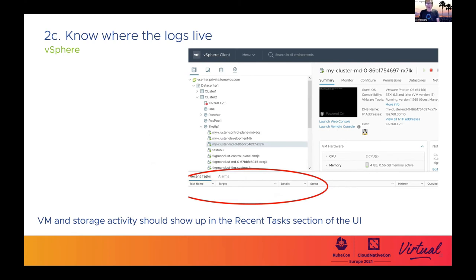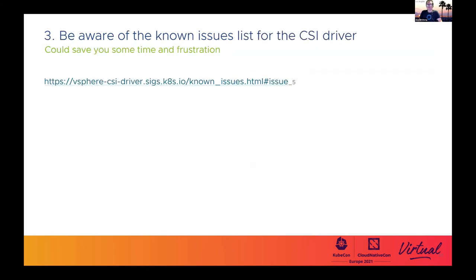Finally, this isn't really logs, but for vSphere here's a good first place to look. In the vSphere UI, the recent tasks section shows activity, and if something went wrong, you'll typically get a clue — possibly a root cause — popping out in that recent tasks list. Third and final item for the top three list is the known issues list for the CSI driver. It could be that you're not the first person to encounter a problem — maybe it's already covered on the known issues list.